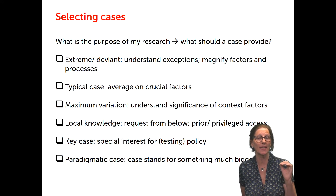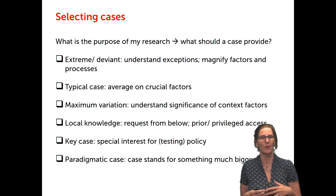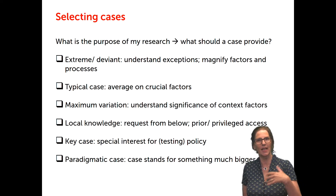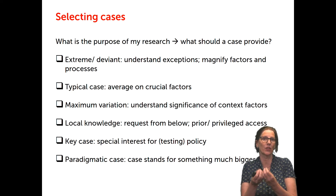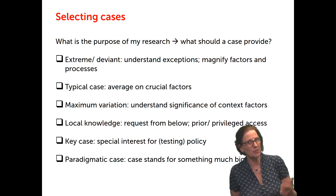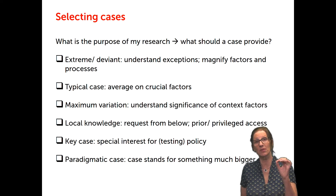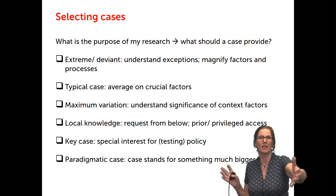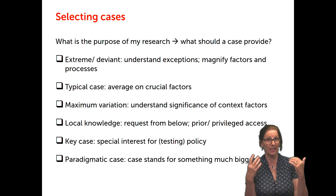You can also go for a typical case — a case that is average on crucial factors, different from an extreme case. For example, wanting to study a city: not a mega city, not a very small city, but an intermediate city, not too big, not too small, where you also seek a median on other variables you find important. In the case of multiple cases, you can go for maximum variation — choosing cases across a number of contexts where you feel those context factors are different, so the context may play out differently for the phenomenon you are interested in.